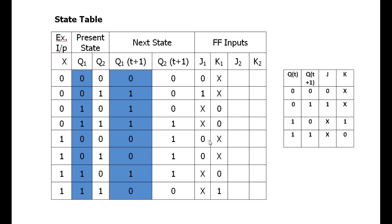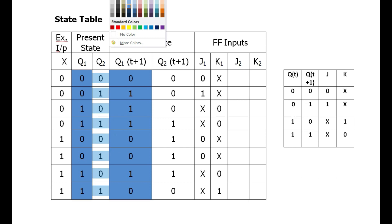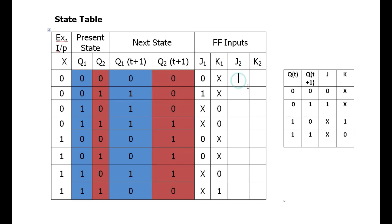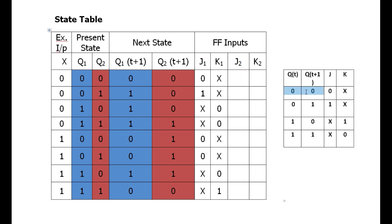Now we find J2K2 using Q2 and Q2(t+1). For Q2: 0→0 gives 0x; 1→0 gives x1; 0→0 gives 0x; 1→1 gives x0. Completing the remaining rows: for 0→1 it is 1x; for 1→1 it is x0; for 1→1 again x0. Filling all values systematically using the JK excitation table.